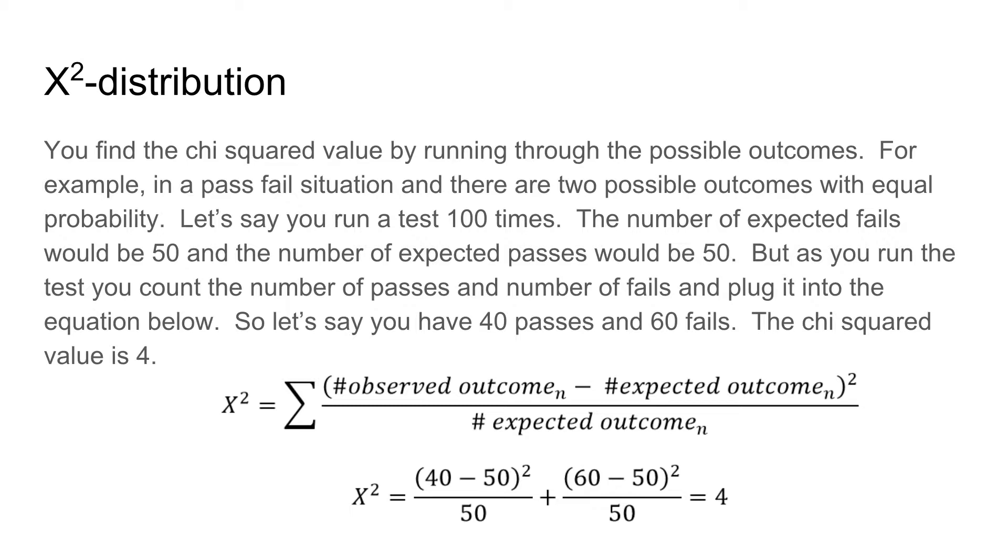But as you run the test, you count the number of passes and fails and plug them into the equation. Let's say you have 40 passes and 60 fails by observation. The chi-squared value is 4.